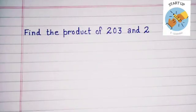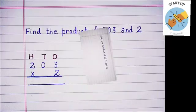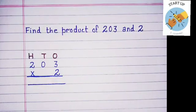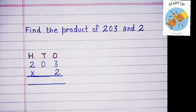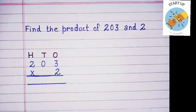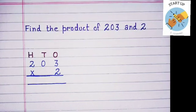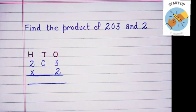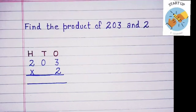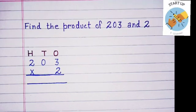Let's go to the next example. Find the product of 203 and 2. We need to arrange them in the columns: 100's, 10's, and 1's. 3 will be written under the 1's column, 0 will be written under the 10's column, and 2 will be written under the 100's column. And the digit by which we will multiply, that is 2, will be written under the 1's column.